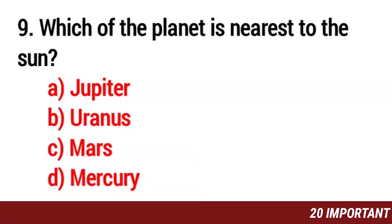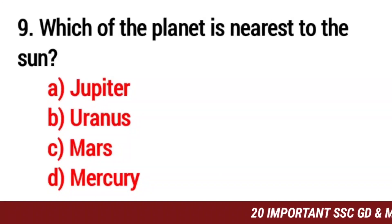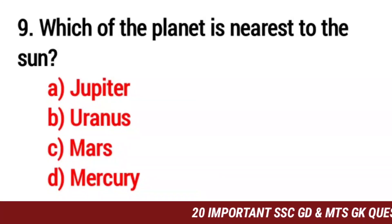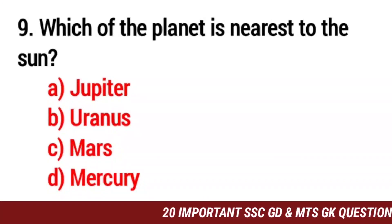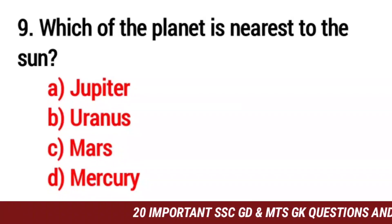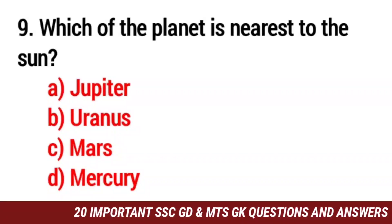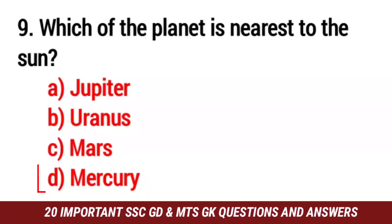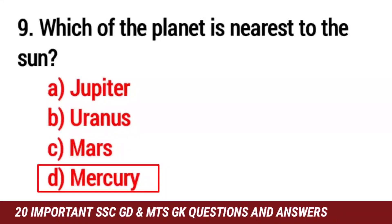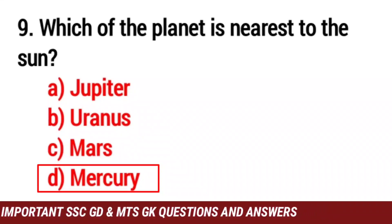Q9. Which of the following is the nearest to the sun? The answer is option D. Mercury.